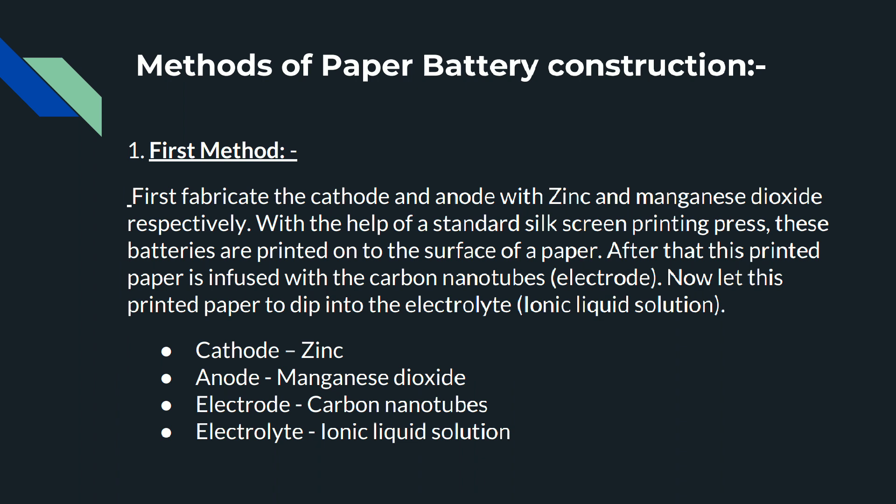These are the methods of paper battery construction. In the first method, the cathode and anode are fabricated with zinc and manganese dioxide respectively, using a standard silk screen printing press. These batteries are printed onto the surface of paper, after which the printed paper is infused with carbon nanotubes.